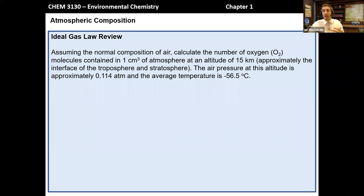Now we've talked a bit about the ideal gas law during this time, and it might be helpful to go through a quick problem refreshing our skills of using the ideal gas law. You may even need to remember what exactly is the ideal gas law. Let's just take a problem here and work through it. So let's assume that we have the normal composition of air, which on the previous page we said 78% nitrogen, 21% oxygen, etc., calculate the number of oxygen molecules, so not the number of moles, but the number of individual molecules contained in one cubic centimeter of atmosphere at an altitude of 15 kilometers, which is approximately the interface between the troposphere and the stratosphere. The air pressure at this altitude is approximately 0.114 atmospheres, and the average temperature is quite cold, negative 56.5 degrees Celsius.